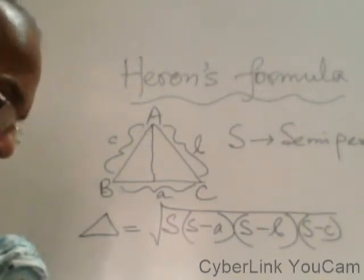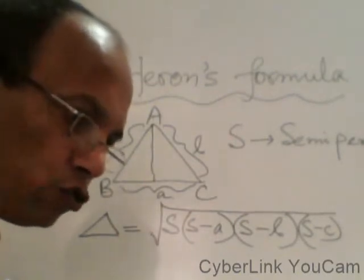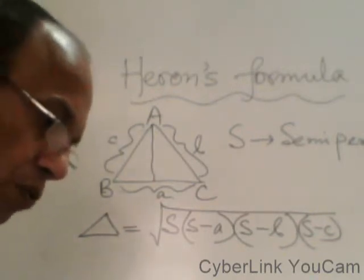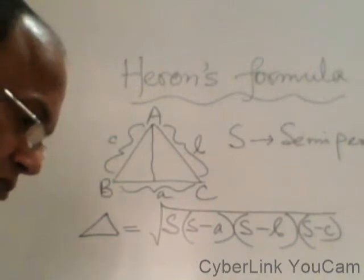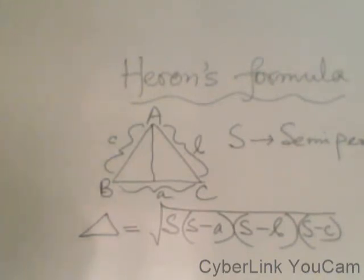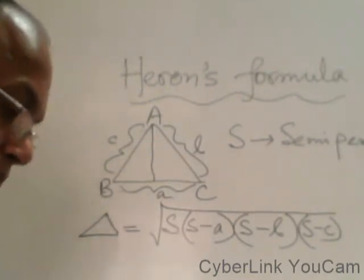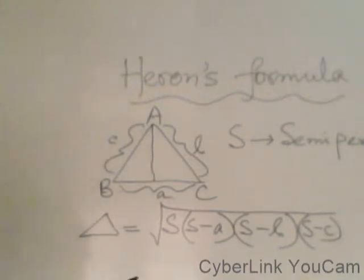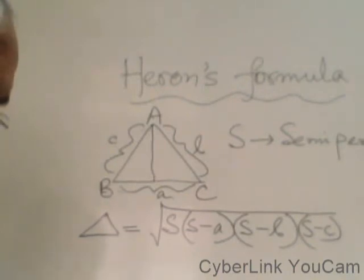In Chapter 12, page number 230, Heron's Formula is given. You see we have isosceles triangle, equilateral triangle, right-angle triangle, acute triangle, and obtuse triangle. The formulas are given for each: what formula to use for isosceles triangle, what formula for equilateral triangle. First we will start with Heron's Formula.